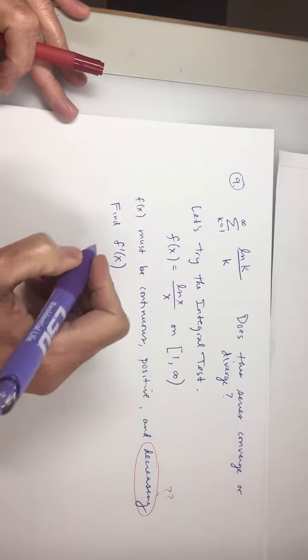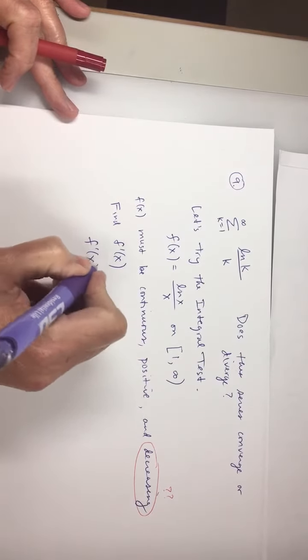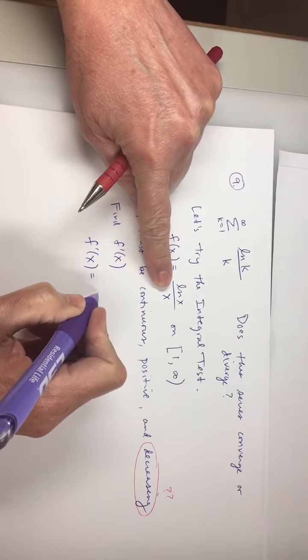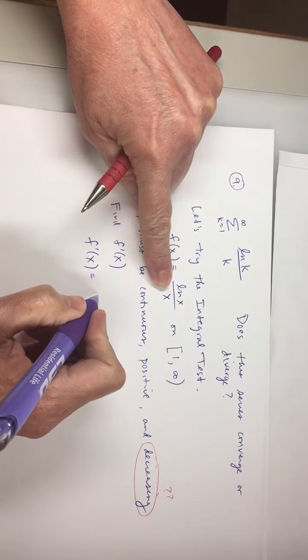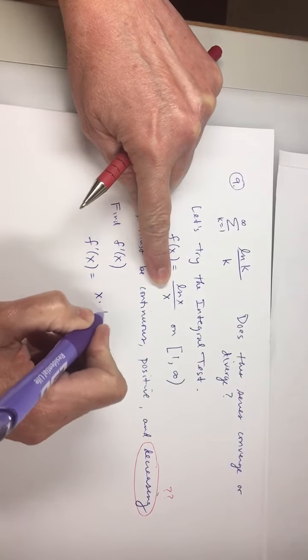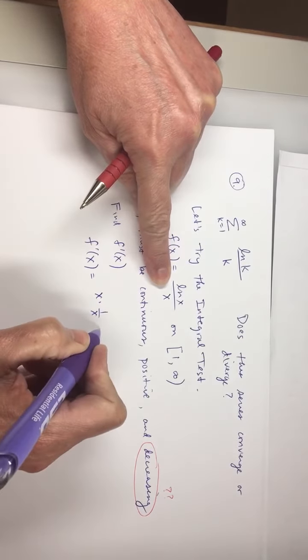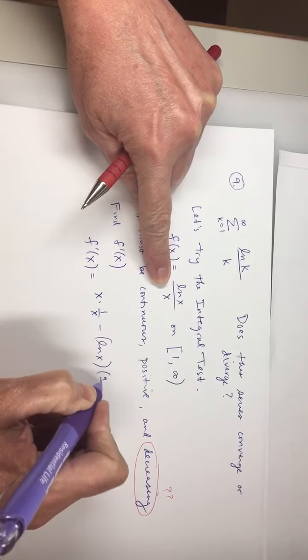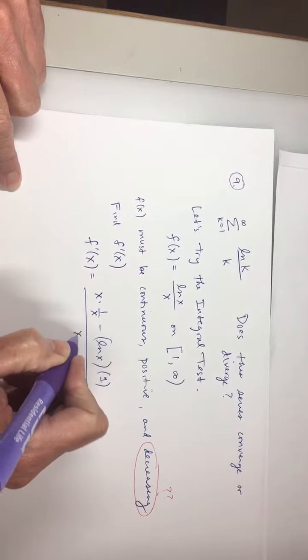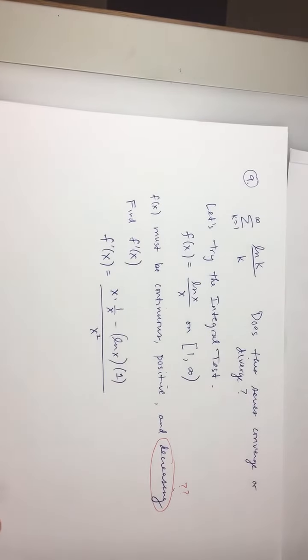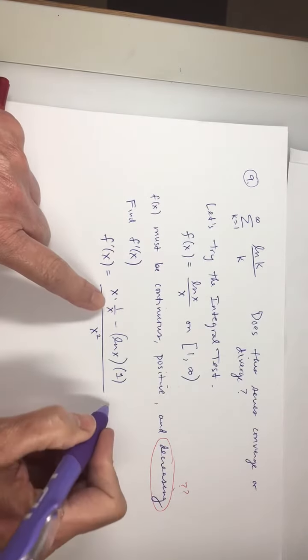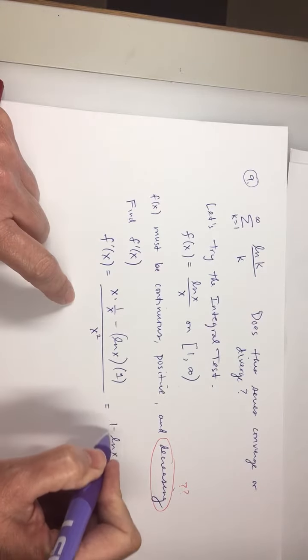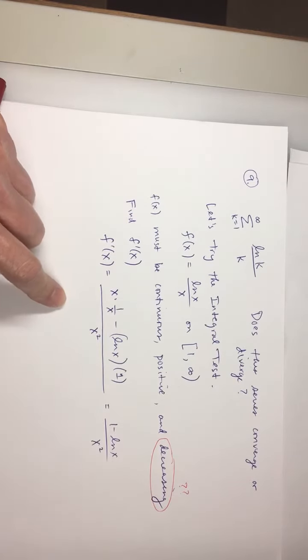Okay. I need the quotient rule. F prime of X, the denominator times the derivative of the numerator minus the numerator times the derivative of the denominator over the denominator squared.